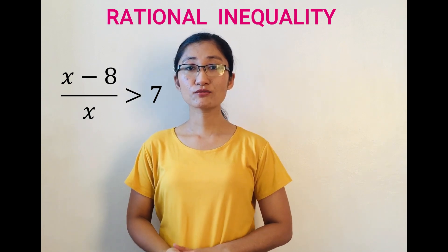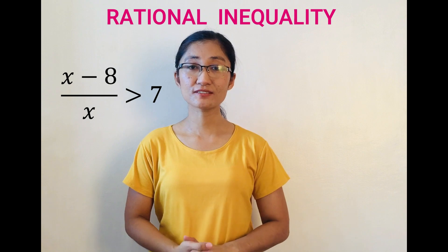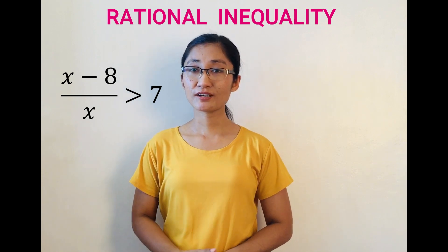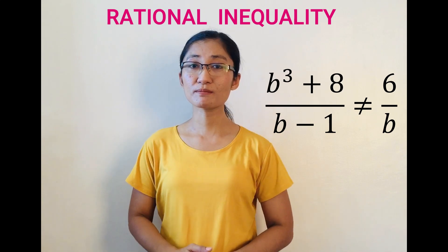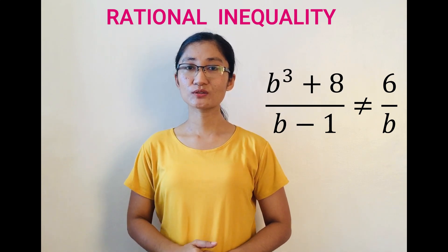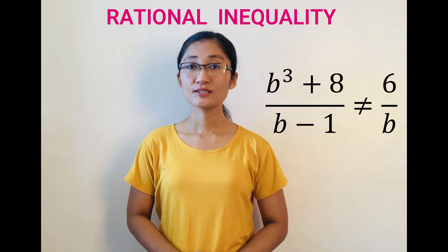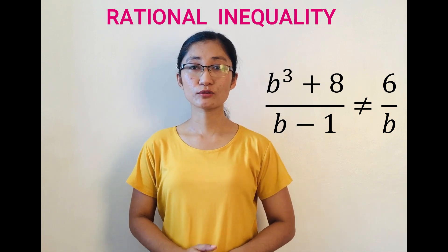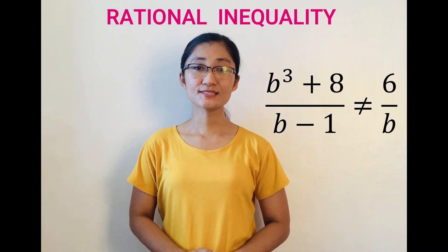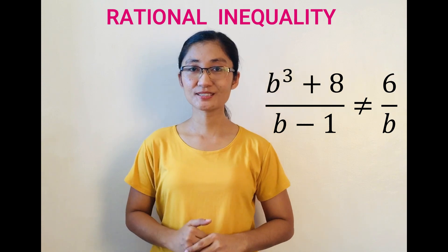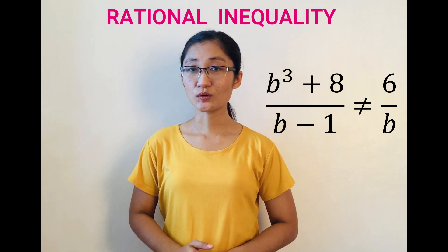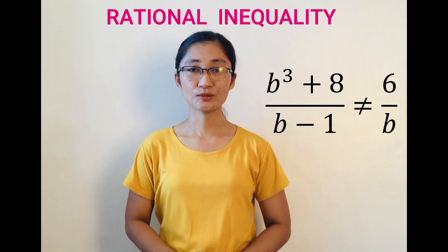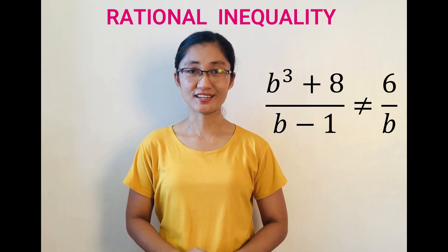Another example is (b³+8)/(b-1) ≠ 6/b. So (b³+8)/(b-1) and 6/b are both rational expressions, and this involves not equal symbol or an inequality symbol. So this is a rational inequality.